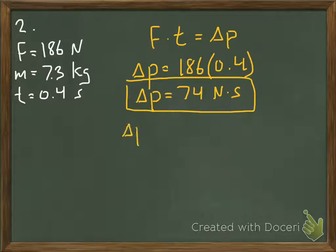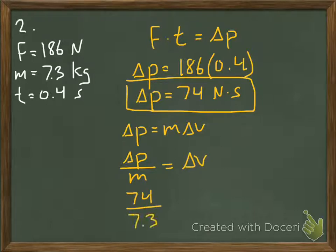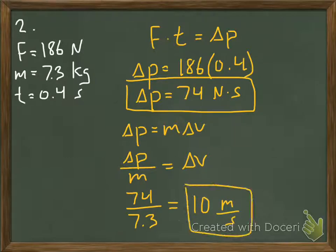The second part is asking: what's the change in velocity? Another way of writing the change in momentum equation is change in momentum equals mass times change in velocity. Rearranging for change in velocity and entering in our values, we can solve to get our answer.